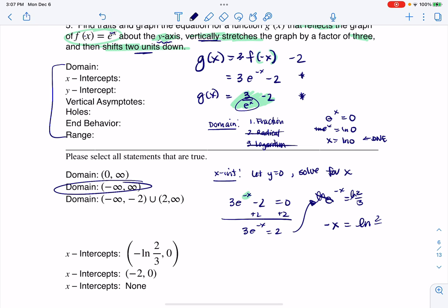And this is the natural log of 2/3. When I divide by negative 1, I get x equaling negative ln of 2/3. Whatever that number happens to be, it's fine. And that would be my x-intercept, and you can see I wrote it as an ordered pair here.